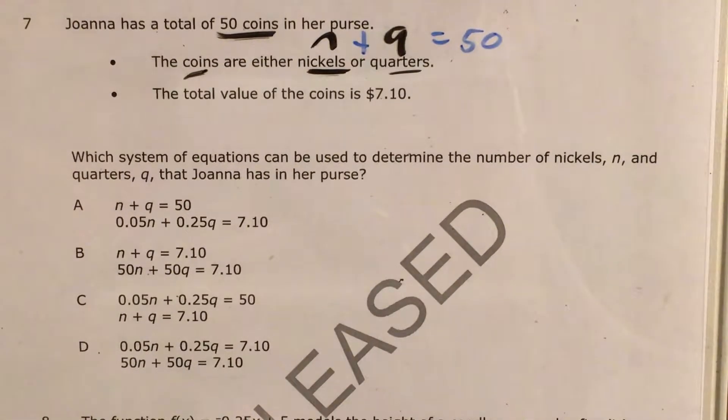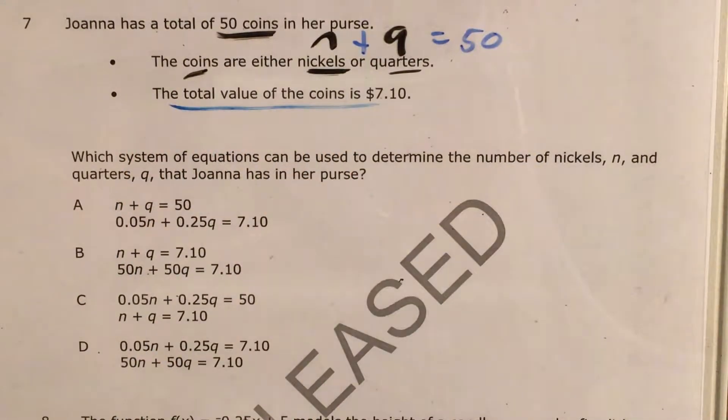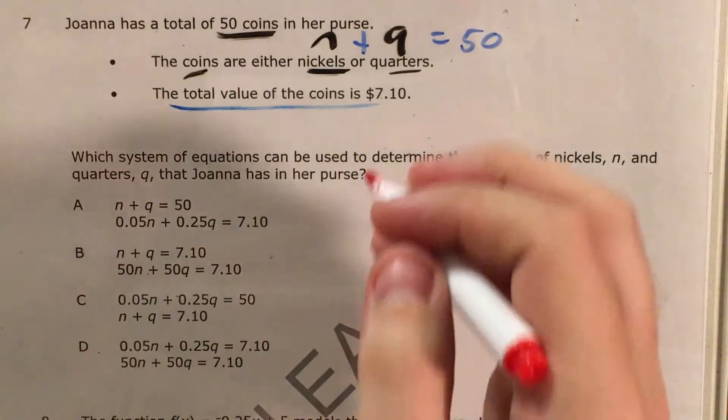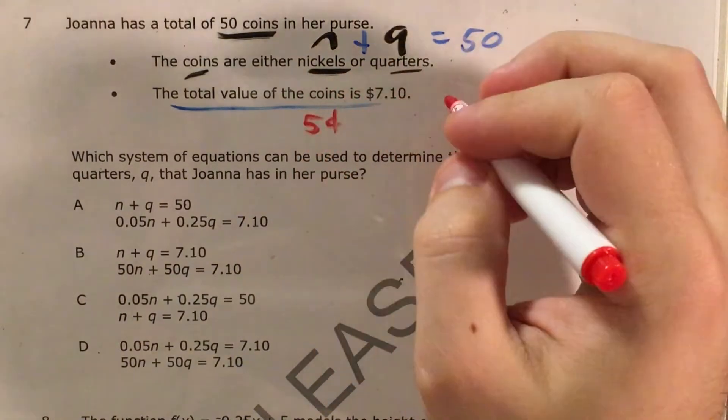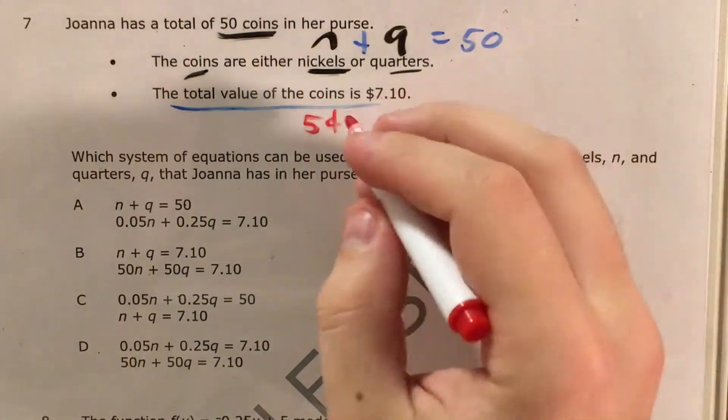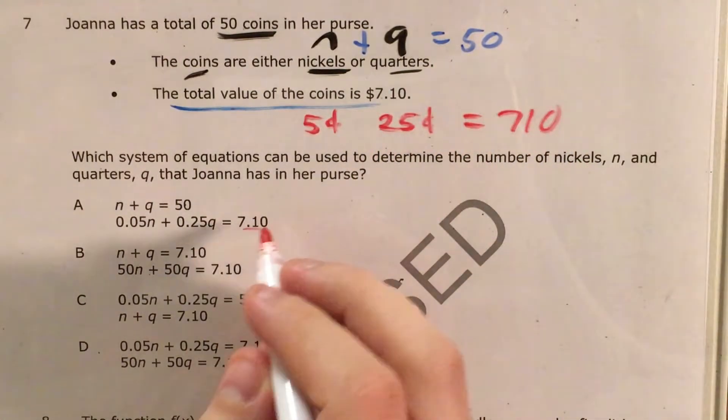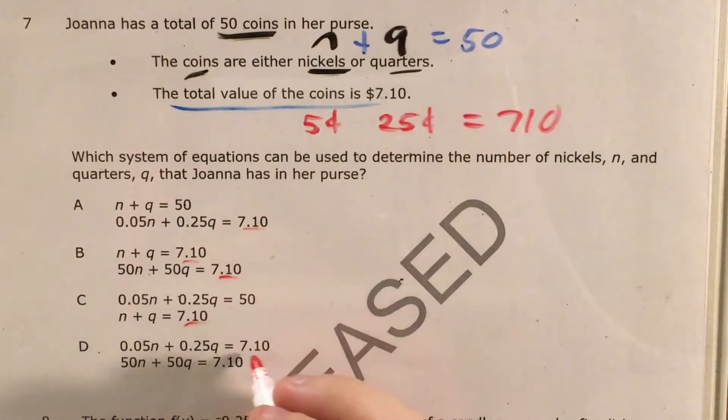And so for the other equation, we actually have to have a look at this bullet, that the total value of the coins is $7.10. Now let's think about the value of a nickel versus a quarter. A nickel is 5 cents and a quarter is 25 cents. But that would equal 710 cents and everything I see in my answer choices has 7.10, which means we're actually going to have to translate this into how many dollars they're worth.